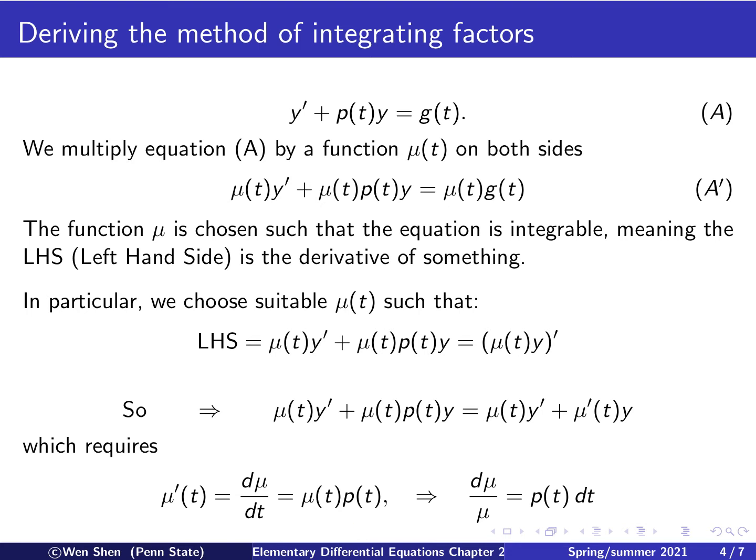We now do a further manipulation. That is, we move the mu term to the left, so we get 1 over mu, and we move dt to the right, and then we have p t times dt. So this is to make that the left-hand side depends only on mu, and the right-hand side depends on p. This actually is a method later on we'll be focusing on called separation of variables.